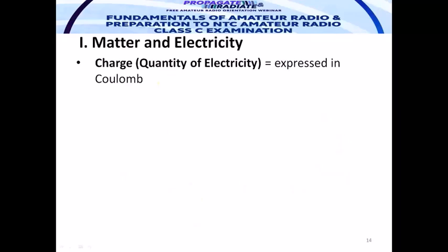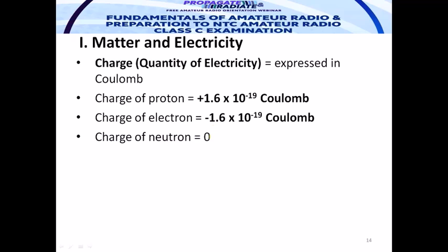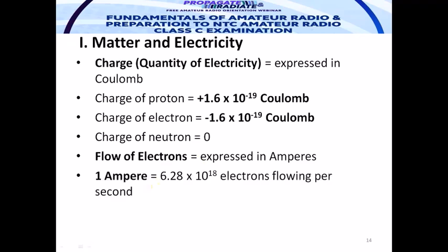Charge is the quantity of electricity expressed in coulombs. The charge of a proton is positive: 1.6 × 10⁻¹⁹ coulombs. The electron has a negative charge of the same magnitude: 1.6 × 10⁻¹⁹ coulombs, but negative. The neutron has zero charge. The flow of electrons is the electric current, expressed in amperes. One ampere represents the flow of 6.28 × 10¹⁸ electrons per second.